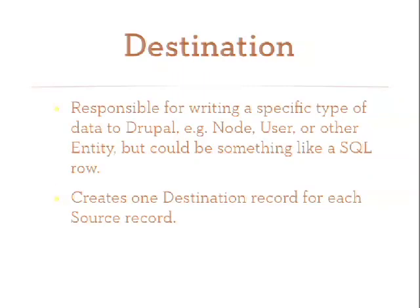On the destination side, it's a little more complicated because it needs to handle writing. For most Drupal entities that come with core — like users and nodes — the support is already provided. There's also a destination that lets you write SQL rows directly. One important thing is that the destination is for a specific type. So if you've got a table of user information to create users and profiles, those are two different destinations and two separate migrations.